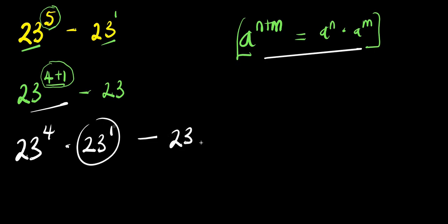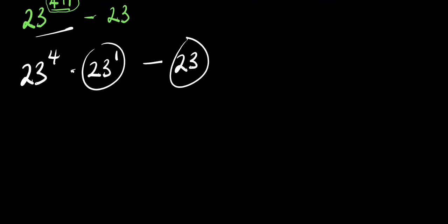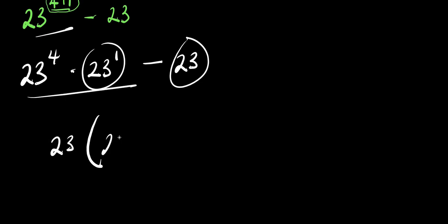So there is 23 here and there is 23 here — we can factor that out. We are going to have 23 times, in the brackets, 23 to the power 4 minus 1.